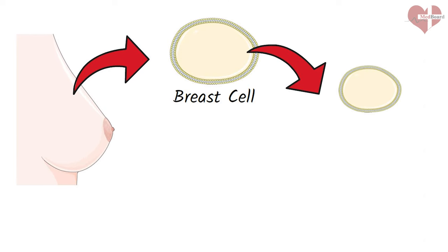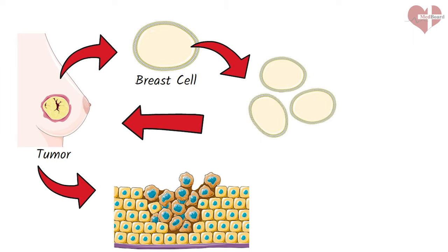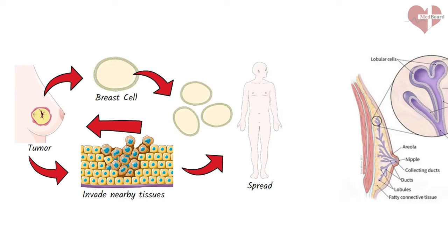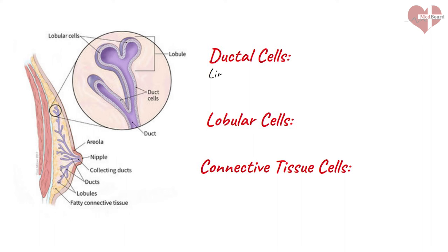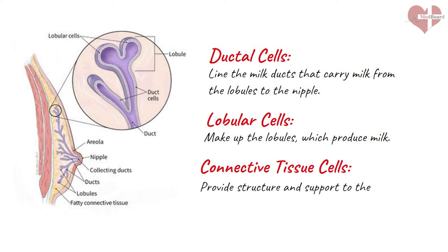Breast cancer develops when normal breast cells start to grow and divide uncontrollably, forming a mass or tumor in the breast tissue. These cancerous cells can then invade nearby tissue and potentially spread to other parts of the body. The breast tissue is made up of several different types of cells, including ductal cells, lobular cells, and connective tissue cells. Ductal cells line the milk ducts that carry milk from the lobules to the nipple. Lobular cells make up the lobules, which produce milk. Connective tissue cells provide structure and support to the breast tissue. Breast cancer can occur in any of these cell types, but it most commonly develops in the ductal or lobular cells.